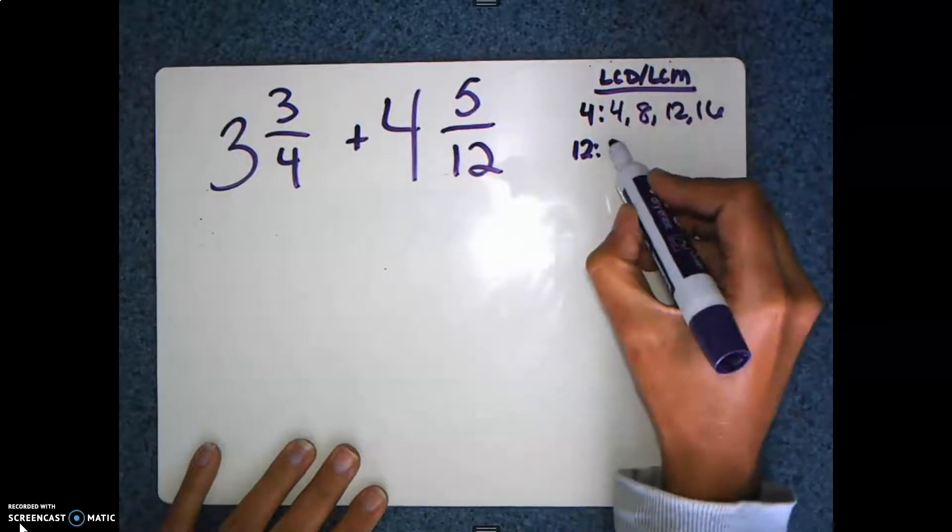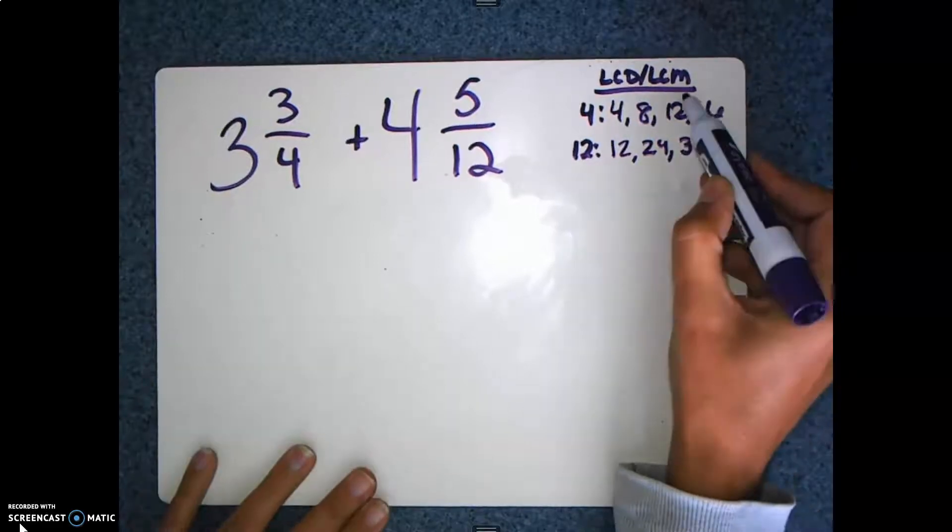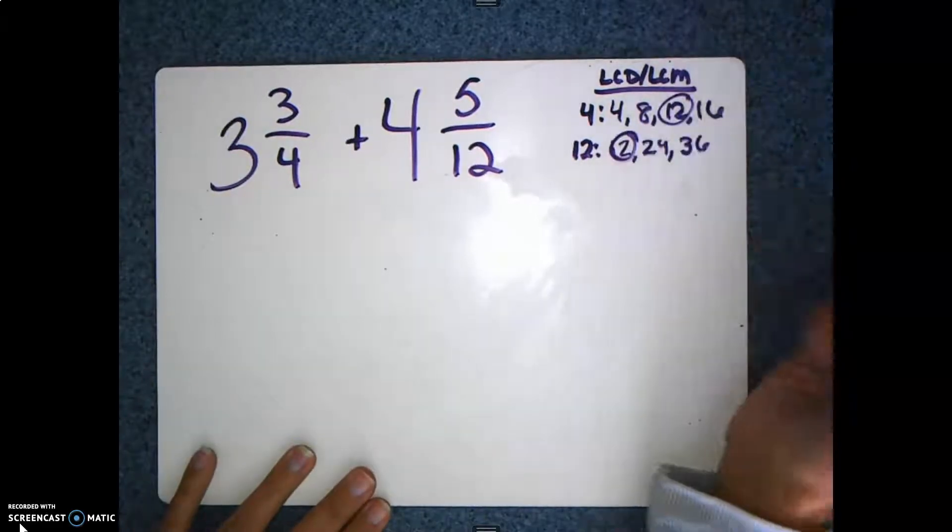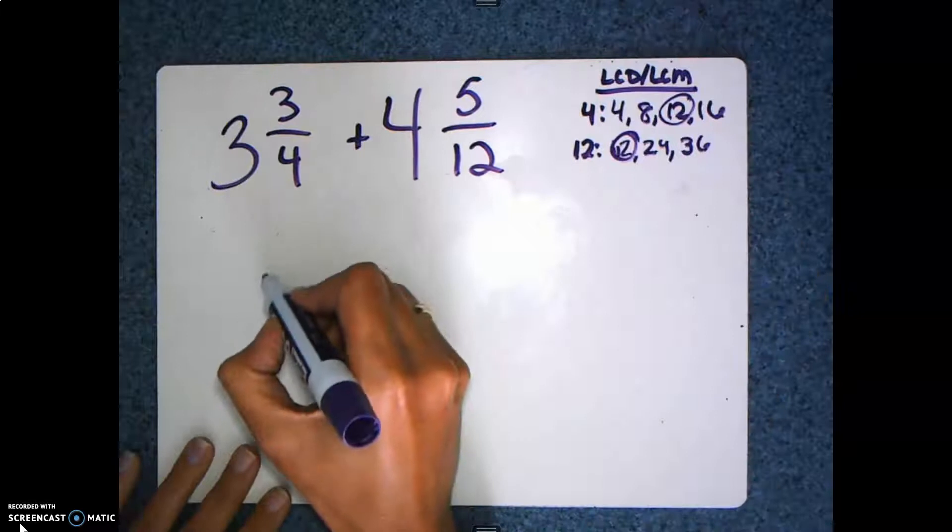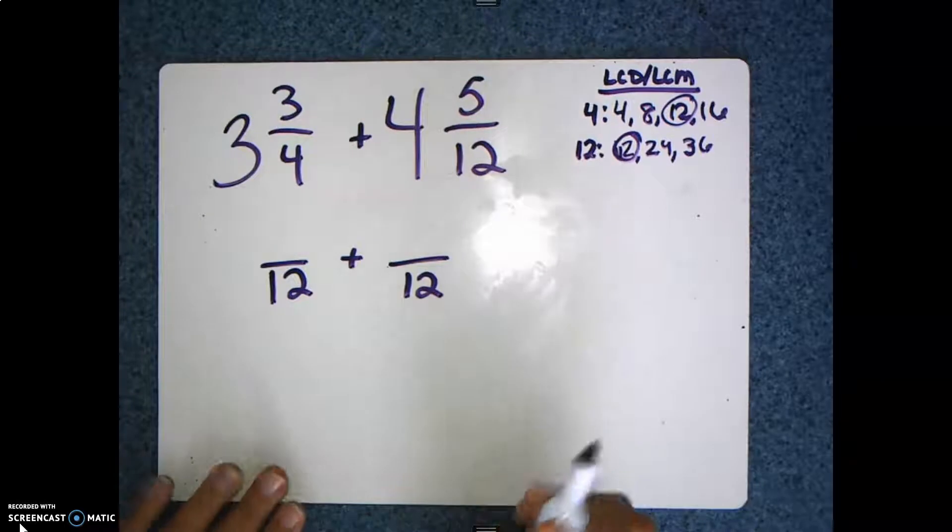And then I'm going to skip count 12 by twelfths: 12, 24, and 36. And if I look at this, I see that 12 is my lowest common denominator, which means that both of my fractions will turn into equivalent fractions with twelfths as the denominator.